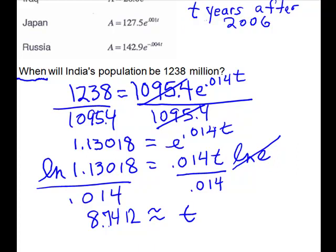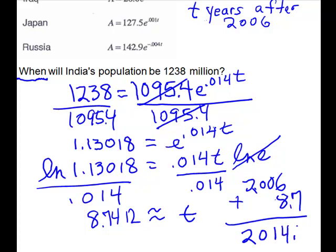The question asks us when. Remember our original problem here - the models were all t years after 2006. And so we could go just to one decimal place, 8.7 years, but we have to add that to 2006, which would be 2014.7. So it happened during 2014. You'll have to just watch your questions and see if they tell you to round to the nearest year, but it actually happened during 2014.